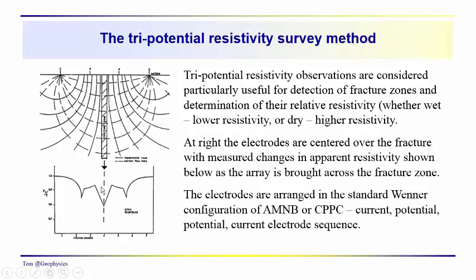We're looking at the response and thinking: low resistivity — is this a good place to drill a water well? Is this a fracture zone? This could be some shallower distribution of resistivity contrast. That's where the tri-potential method comes in handy, helping us differentiate between what might be a shallow concentration of low resistivity material and something more extensive.